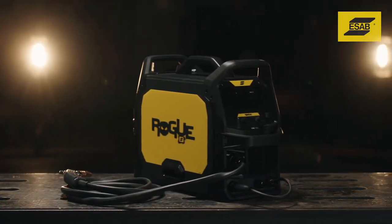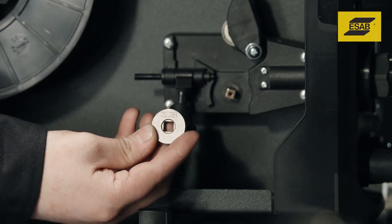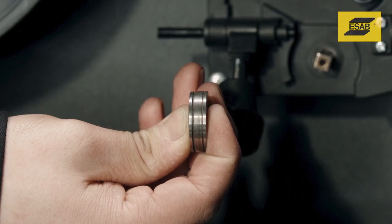For the Rogue 125, the wire size stamped on the outside of the roll corresponds to the diameter of the outside groove.